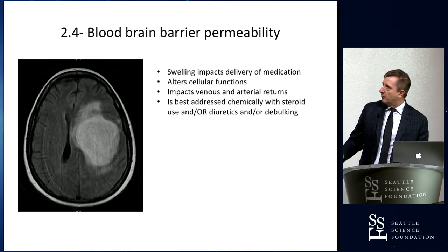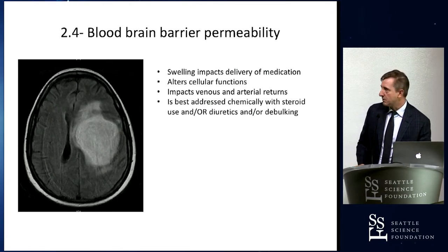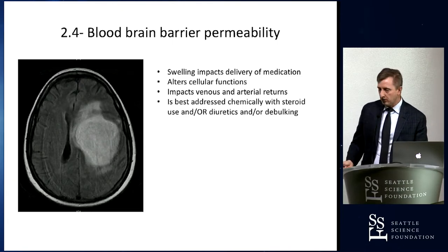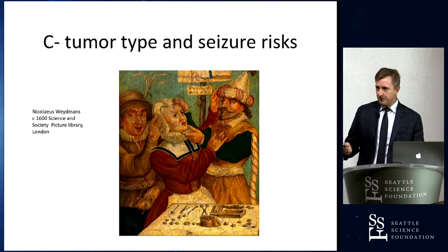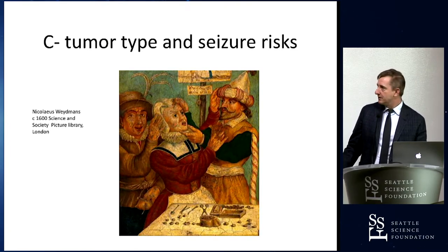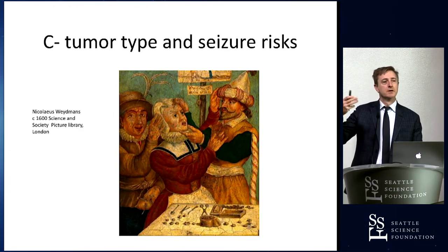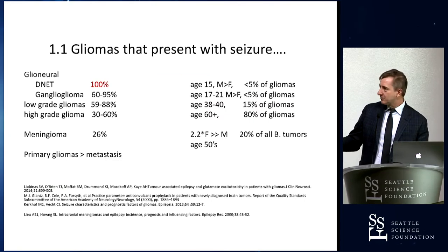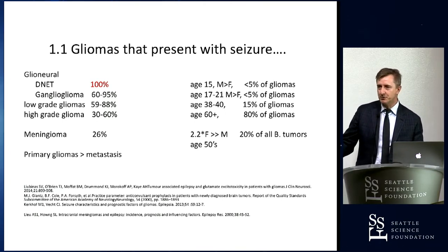Blood-brain barrier permeability makes seizure activity different. Swelling impacts the ability to deliver medications to the edge of the tumor site, which is typically the most active area in large tumors. That swelling is best addressed with debulking, diuretics, or steroid therapy. Now, tumor types and seizure risks — this is stuff you need to know for boards and certification.